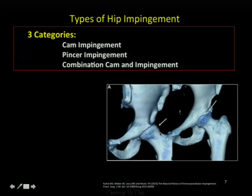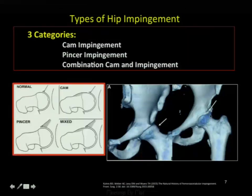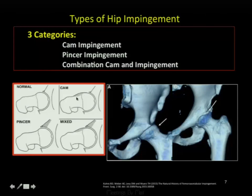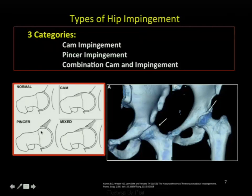You can see this is an abnormal head-neck junction and an over-covering acetabulum. In CAM type, there is a bulging or lack of normal transition, and there is a measurement called the alpha angle. In pincer, there is an over-covering head so that at normal flexion, impingement occurs. A mixed type involves elements of each.